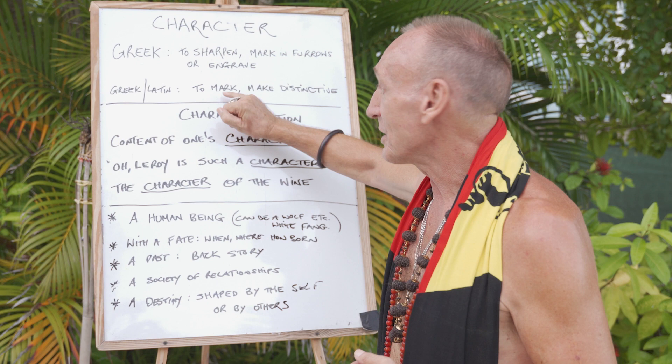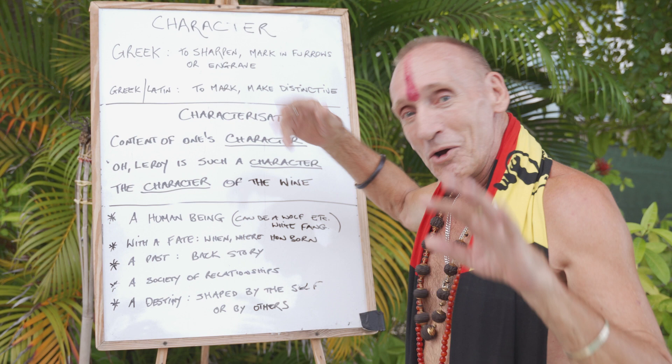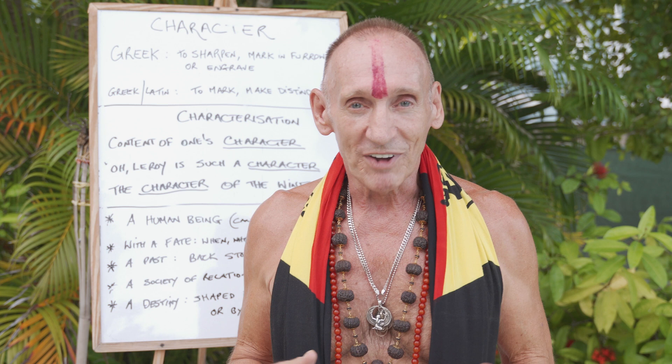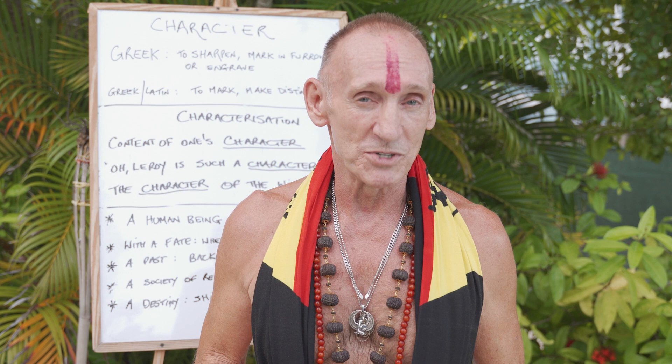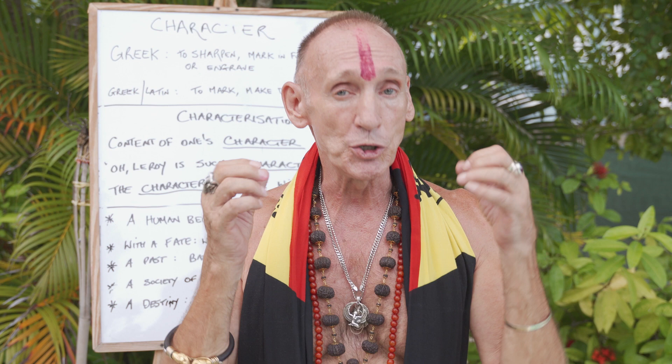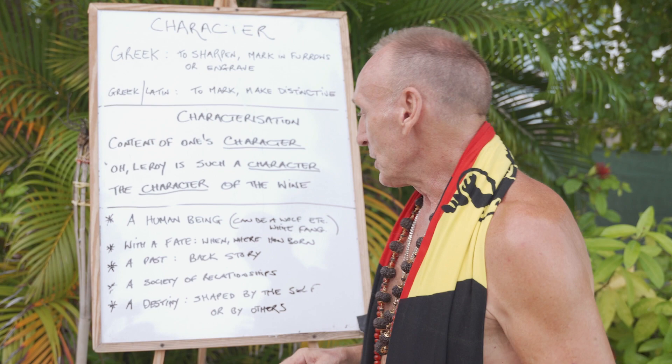Let's go from here with this understanding, going back to the root of the word, and look at what a character is. I've started with a human being, but of course a character could be a dog, a wolf, as in White Fang; a horse, as in Black Beauty; an elf, or a gnome, or whatever. A character could be an inanimate object passed from person to person until that thing has a kind of life force within itself. A character can really be anything you want it to be.